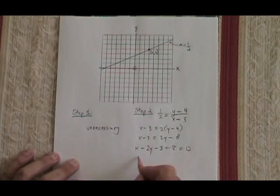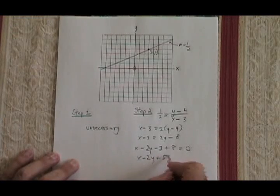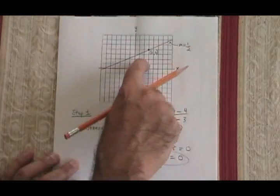I have to combine my two constant terms. So my final answer is x minus 2y plus 5 equals 0. This is the equation for this line.